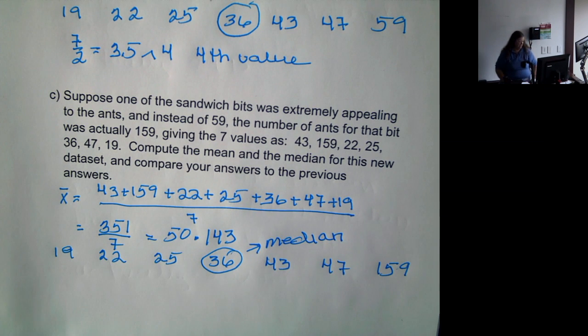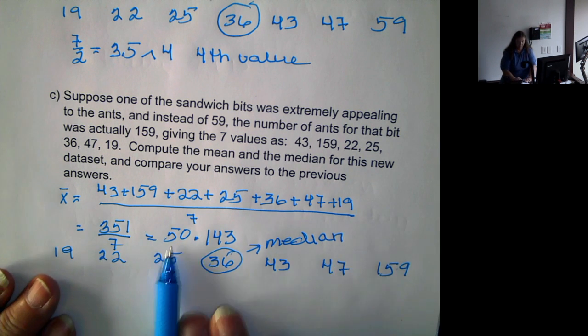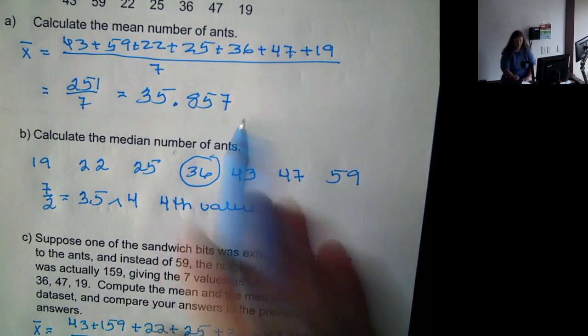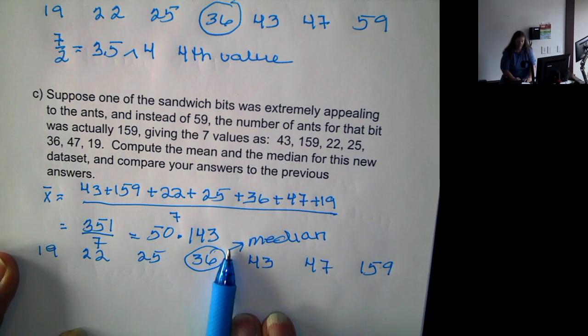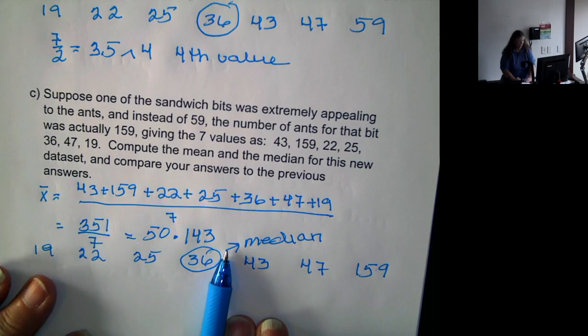This shows us that the median is not affected by outliers or by large numbers, yet the mean is, and that 159 pulled it up quite a bit from 35.857 to 50.143.